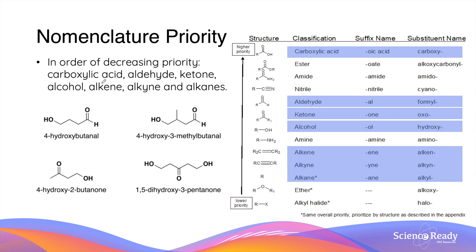When naming organic compounds, aldehyde and ketone have higher priority than alcohol and simple hydrocarbons. For example, in a molecule containing both an aldehyde and an alcohol functional group, the suffix is -al, which is the aldehyde suffix, while the alcohol is denoted by the prefix hydroxyl. Similarly, in a molecule containing both an alcohol and a ketone, the suffix becomes -one for the ketone and the alcohol takes on the prefix hydroxyl again.